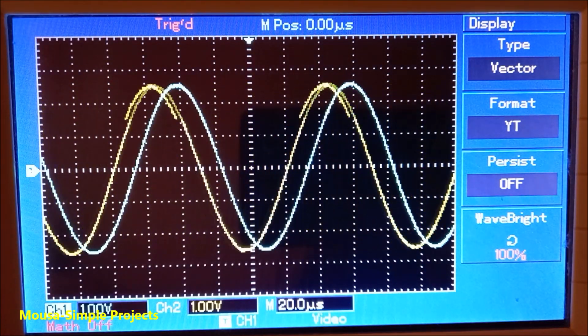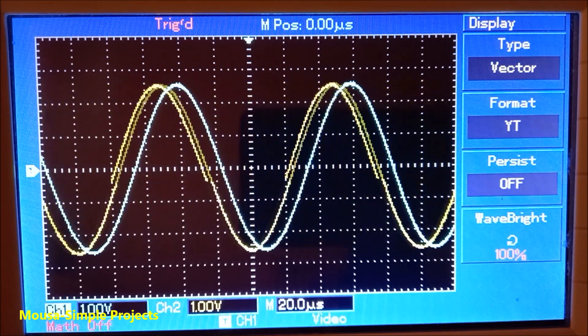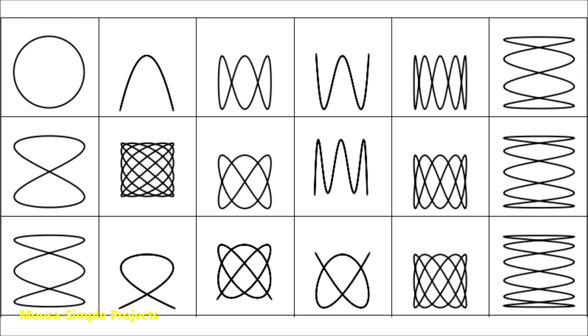However, any differences between the two waveforms in terms of frequency or phase angle result in some beautiful shapes. The curves that are produced from this method are called Lissajous figures.